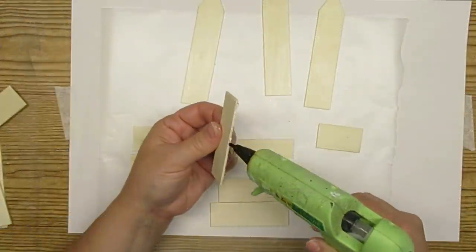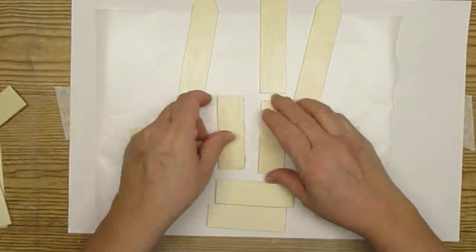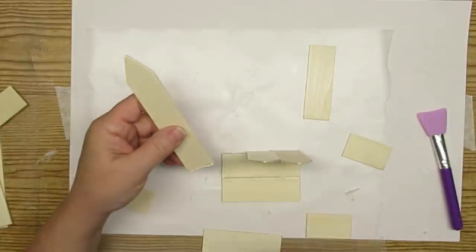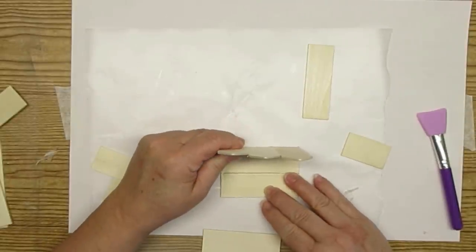This DIY is super cute. I'm using some of these garden stakes that I pick up from Dollarama every year, and I'm just going to create a little picket fence crate.